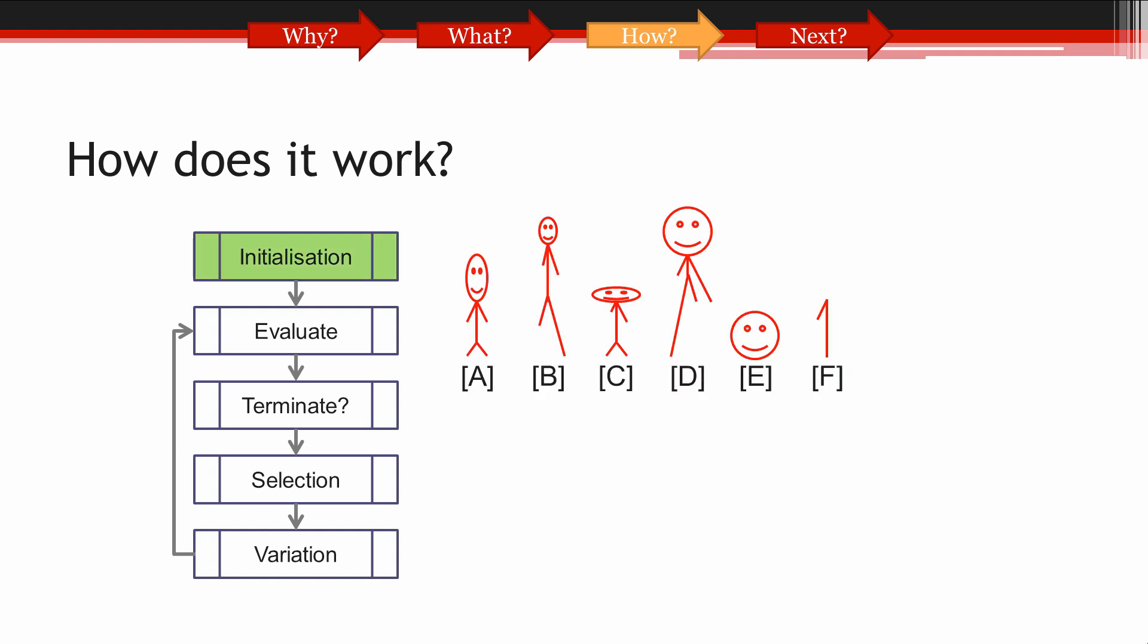The first stage of any evolutionary algorithm is initialisation. We can think about this stage as some kind of big bang, where we create our initial population out of nowhere. We call a group of solutions to a problem at any stage of the progress a population. And in this case, we have randomly generated our solutions.